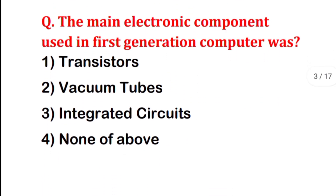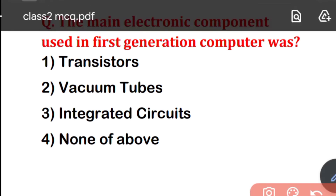The main electronic components used in the first generation computer: the options are Transistors, Vacuum Tubes, Integrated Circuits, or None of these. In the first generation we used vacuum tubes — that is the correct answer.